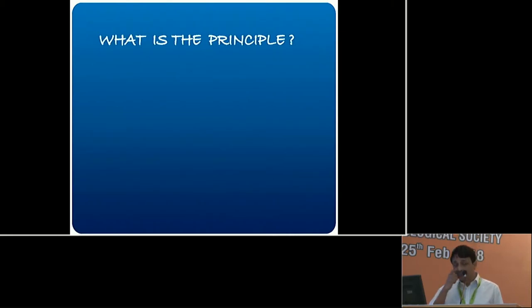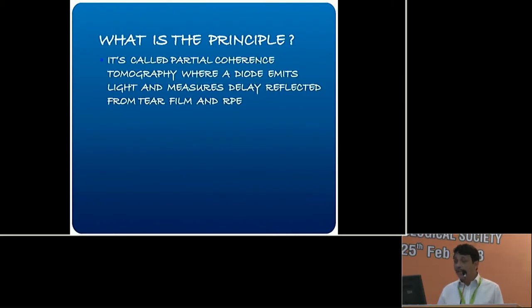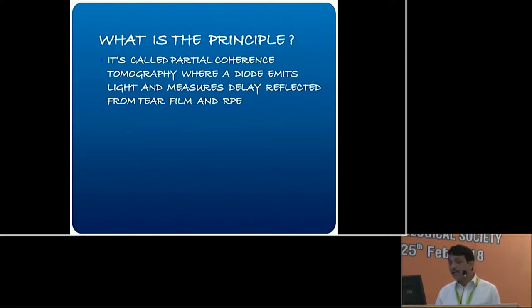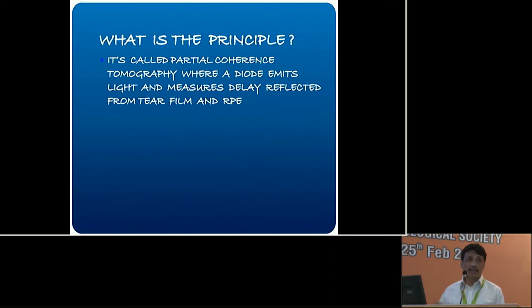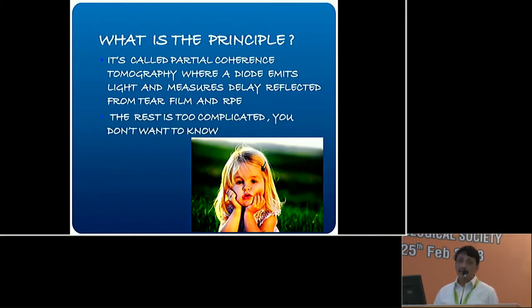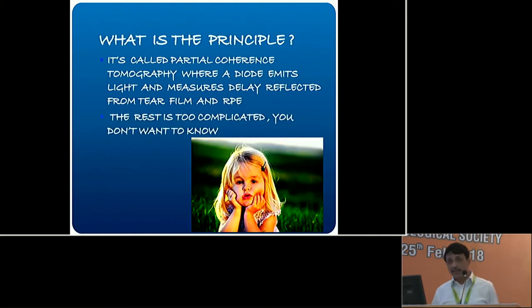Now what is the principle? The principle is called partial coherence tomography, where a diode emits light and measures the delay reflected from the tear film and RPE, and calculates from the difference in interference patterns between what was sent and what was reflected. From that difference in interference patterns, it calculates the axial length. The rest is too complicated — this is not a physics lecture.